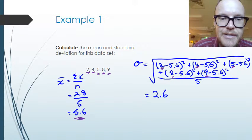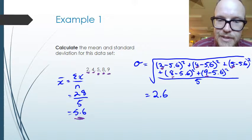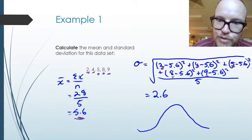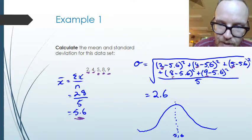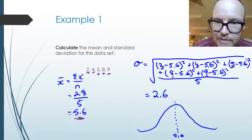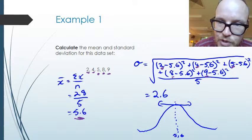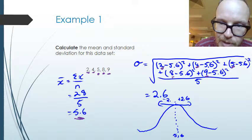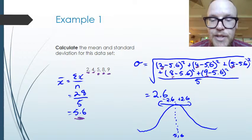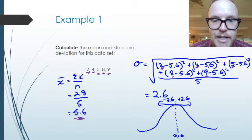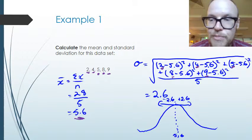A standard deviation of 2.6 means that if we were to draw a graph of the data, with 5.6 as the mean at the centre, the majority of the data lies 2.6 above and 2.6 below the mean. So our standard deviation is 2.6.